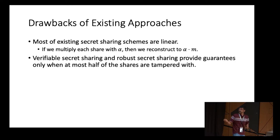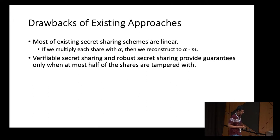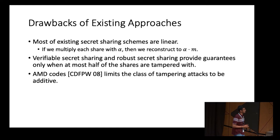Primitives such as verifiable secret sharing and robust secret sharing only provide guarantees when at most half the shares are tampered with. However, it's possible for the adversary to corrupt all channels and tamper all the shares, in which case these primitives provide no meaningful security guarantees. A beautiful work of Kramer et al. introduced algebraic manipulation detection codes, which can detect if tampering has occurred, but restricts tampering attacks to only additive functions — a very restrictive class.